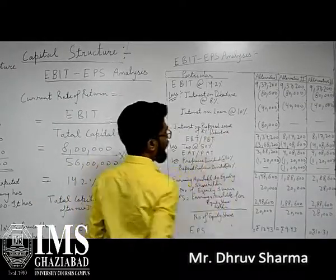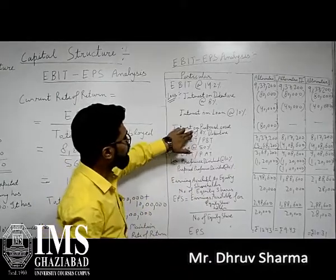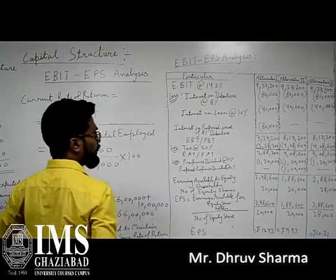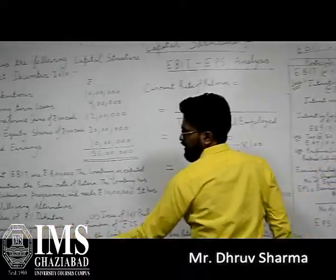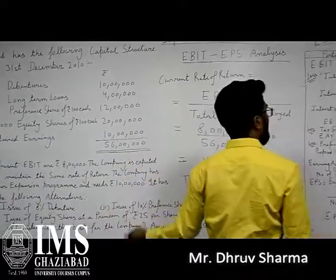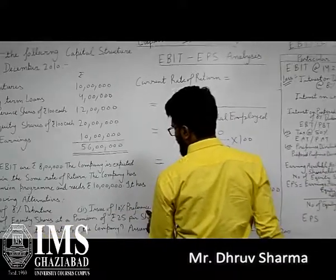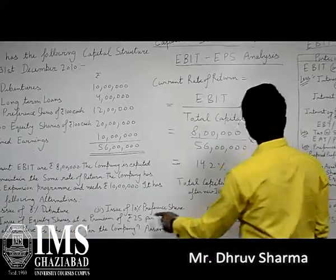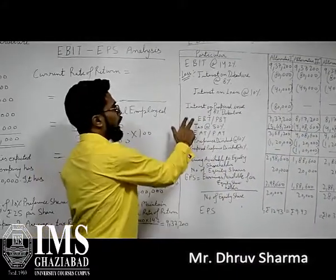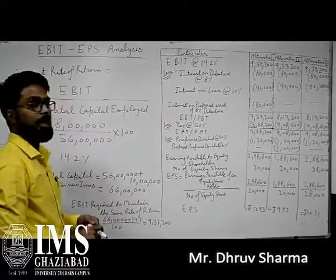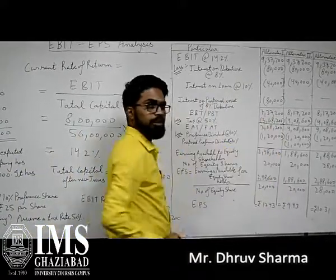Then we deduct interest on the proposed issue of 8% debentures for the expansion program. At 8% on rupees 10 lakh, that gives us 80,000. So interest on proposed debentures is 80,000 in the first alternative. In the second and third alternatives, we are issuing preference shares or equity, so there is no additional debenture interest to deduct. After deducting interest on long-term borrowings, profit before tax in the first alternative is rupees 7,27,200.